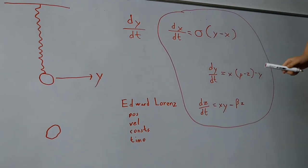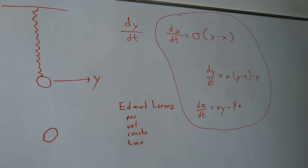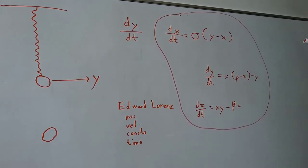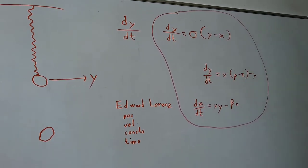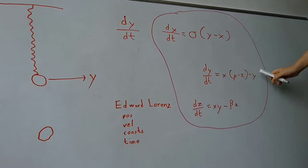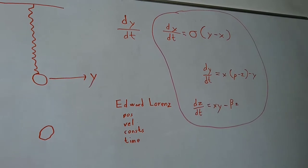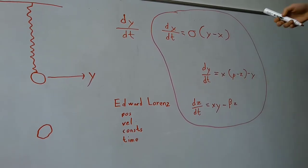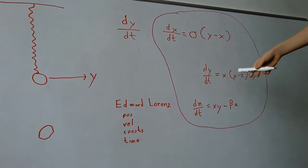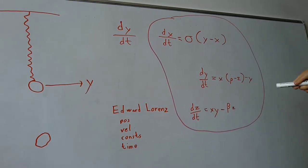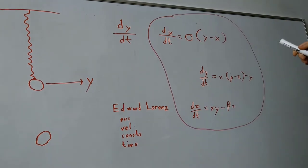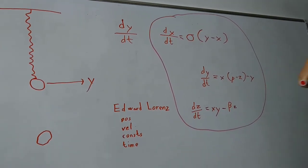Dy over dt equals x times rho, which you're gonna see is constant y in the code, x times rho minus z minus y. And then dz over dt equals x times y minus beta, which you're gonna see in the code is const dot z, times z.